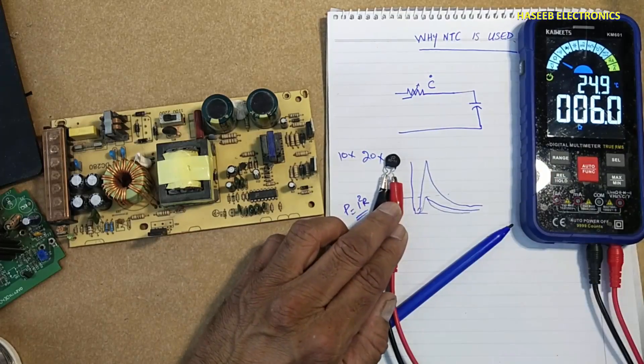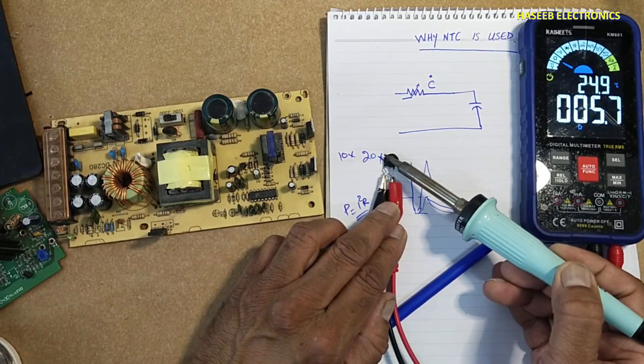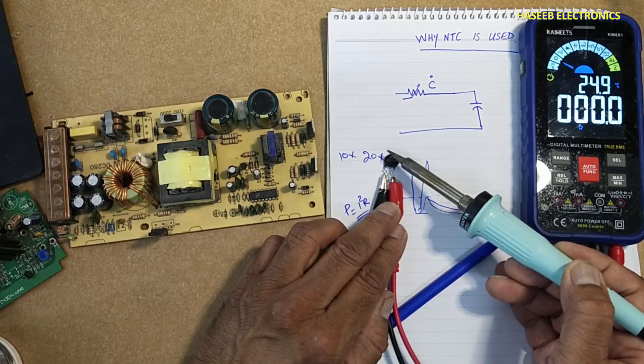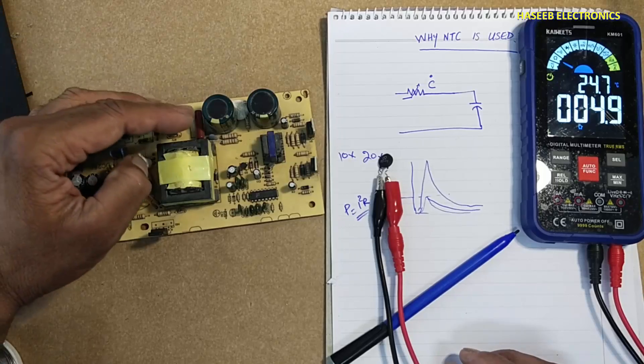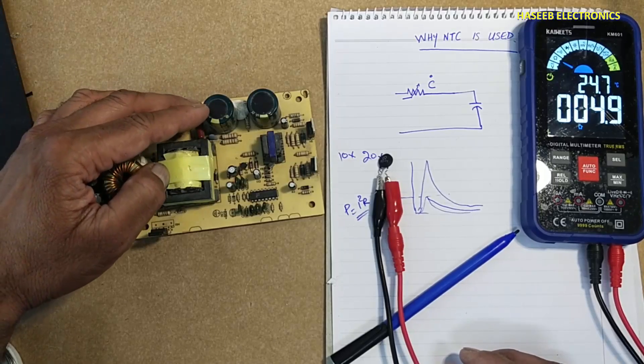Normally it is 5 ohms. When it is heated up, we can see its resistance is dropped, so it will protect the system from drawing high current while charging process of these capacitors.